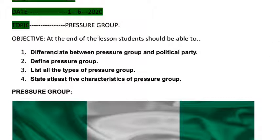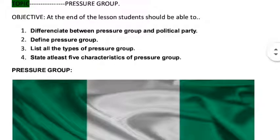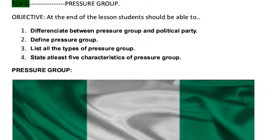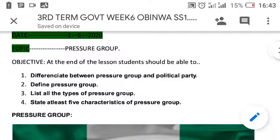At the end of the lesson, you should be able to know the difference between pressure group and political party. Number two, define pressure group. Three, list all the types of pressure group. Lastly, state at least five characteristics of pressure group. Our topic today is pressure group.